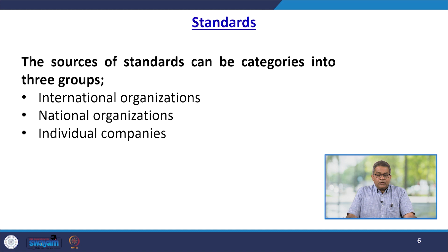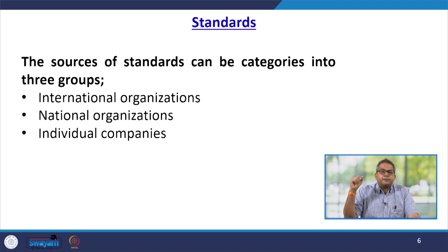The sources of standards can be categorized into three groups: international organizations like ISO — International Standard Organization — national organizations like the Bureau of Indian Standards, and individual companies. Each company has their own standards.